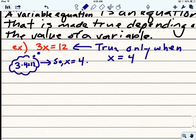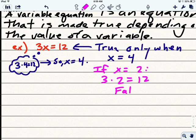So for example, I can say something like, if x equals 2, then 3 times 2 equals 12, and that's a false equation.